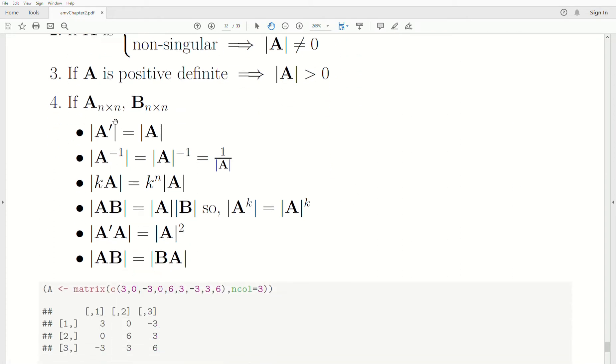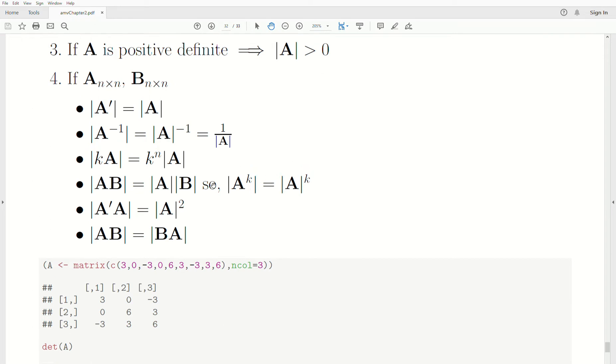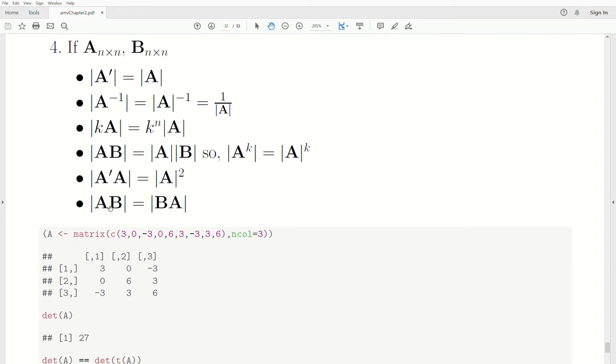Here's some additional properties. We have two matrices. The determinant of the transpose is the same as the determinant of the original matrix. The A inverse, the inverse can be brought outside. Remember, the determinant of A is a number. So a number raised to the minus one is like taking it into the denominator. So those two are equal. The determinant of the product is the product of the determinants. And then this is sort of a consequence of this. The determinant of AB is equal to BA.